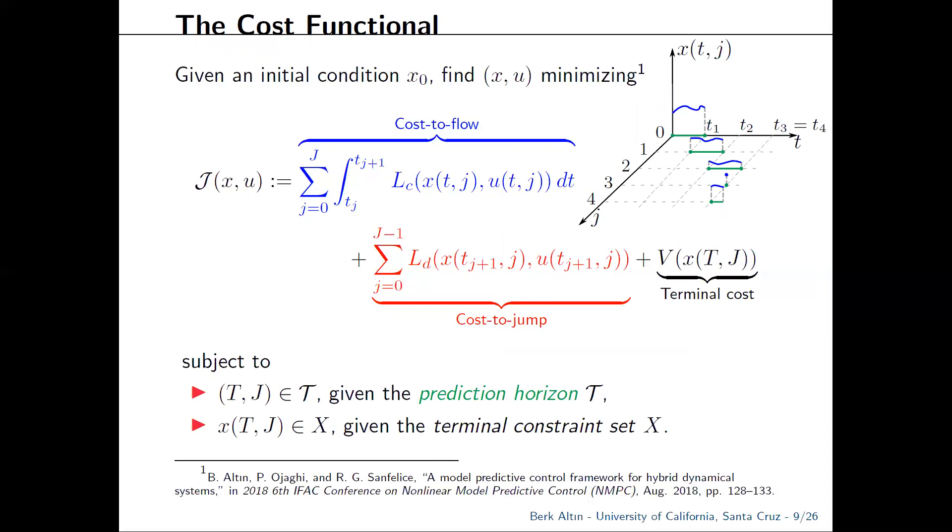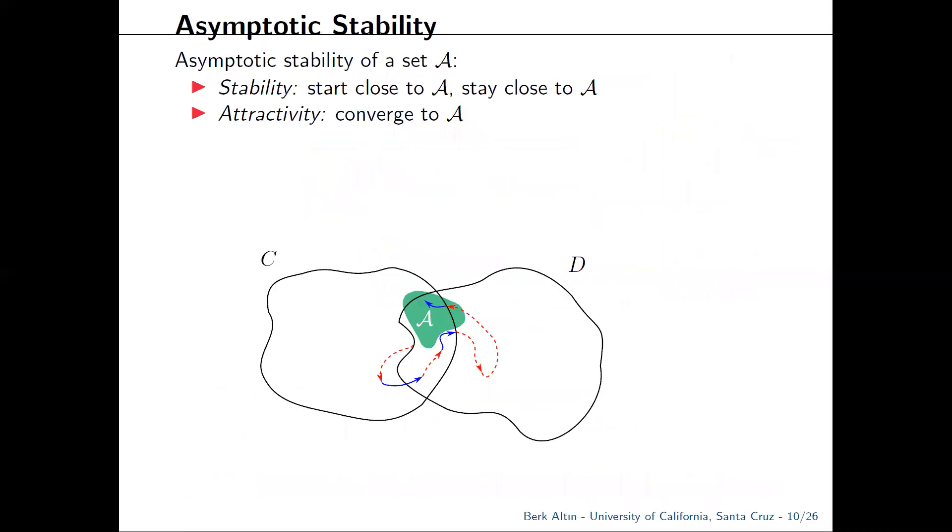So why a prediction horizon, why a set called the prediction horizon, and why don't we fix the terminal time t, j? I'll explain that with an example. And to do that, let me first clarify the notion of asymptotic stability for hybrid equations. Say that you have a closed loop system and would like to asymptotically stabilize a closed set A.